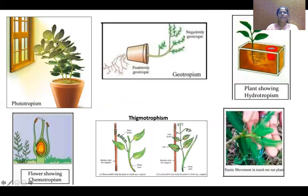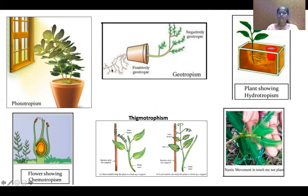When light is present, auxin production is higher on the shaded side of the shoot tip. Growth in that shaded region is greater, so the whole plant bends towards the light and grows. This phototropism happens due to the presence of auxin at the tips. Similarly, geotropism — growth against or towards gravity — also happens due to auxin production at the root tips, causing roots to grow towards earth's gravity.